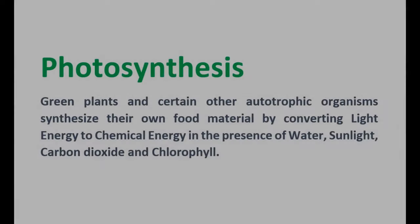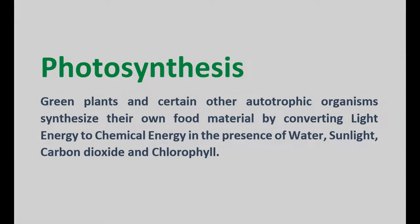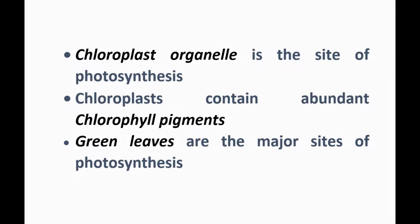Photosynthesis is the process by which green plants and certain other autotrophic organisms manufacture their own food material in the form of carbohydrates from carbon dioxide and water in the presence of chlorophyll and sunlight, through a complex series of reactions within the organism. In other words, it is a process of converting light energy to chemical energy.